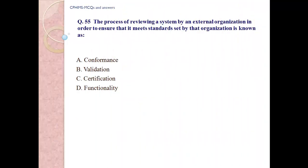Question number 55: The process of reviewing a system by an external organization in order to ensure that it meets standards set by the organization is known as: A. Conformance. B. Validation. C. Certifications. D. Functionality. Answer: C. Certifications.